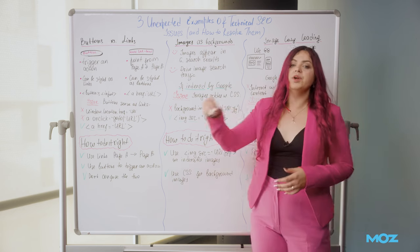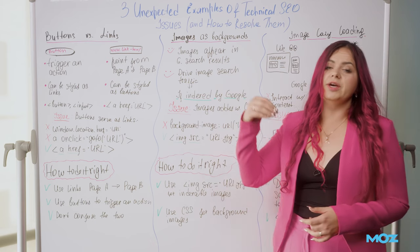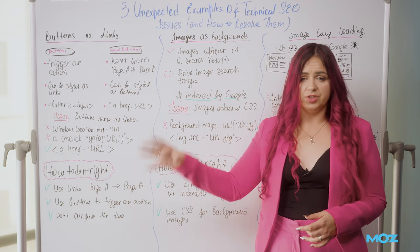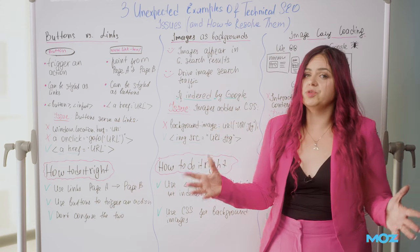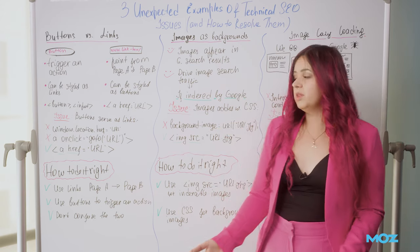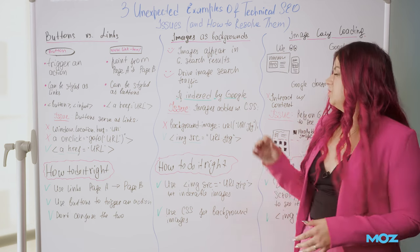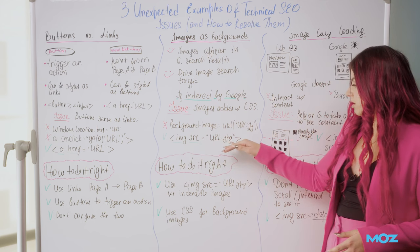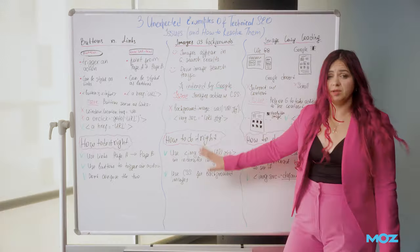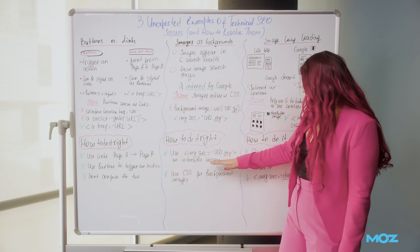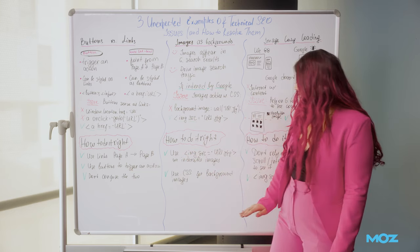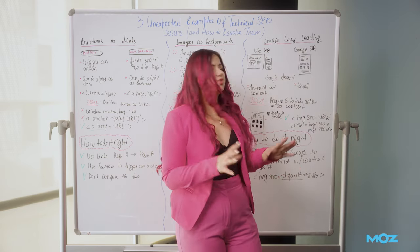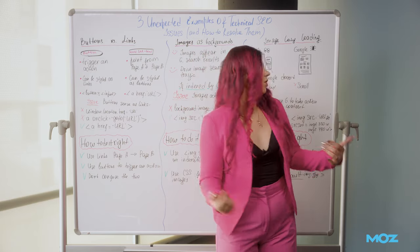If you use CSS for adding images, it won't be possible to index or rank them, because even though there is a URL pointing to the image location, you're explicitly telling Google to disregard this image — it's just a background image that's part of the design. So if you want images to be indexable and rankable, use an img tag with a src attribute pointing to the image location. Use CSS background images only for design elements that you don't care about for traffic.